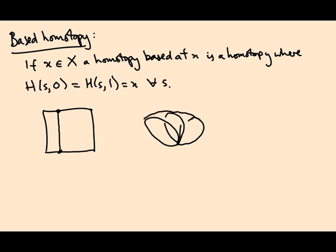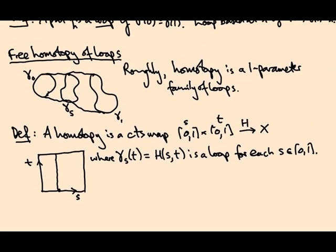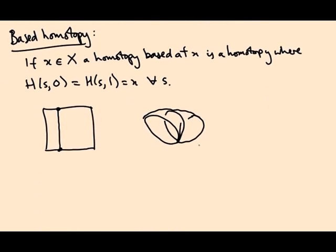So a based homotopy looks more like this. Right, the free homotopy on the previous page, the loops don't have to pass through a fixed point, they can just kind of wiggle around. But for a based homotopy everything has to pass through a fixed point x.